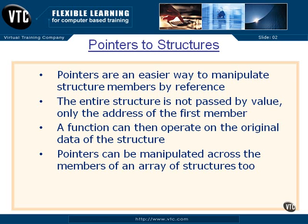Pointers can be manipulated across the members of an array, just like we saw pointers to arrays previously — when you increment a pointer, it goes to the next element of the array. If you increment a pointer that is pointing to an array of structures, it will go to the next structure in the array. Rather than skipping forward a few bytes like an integer, if a structure is 50 or 60 bytes, the compiler knows what the pointer points to and increments it the appropriate number of bytes through memory.